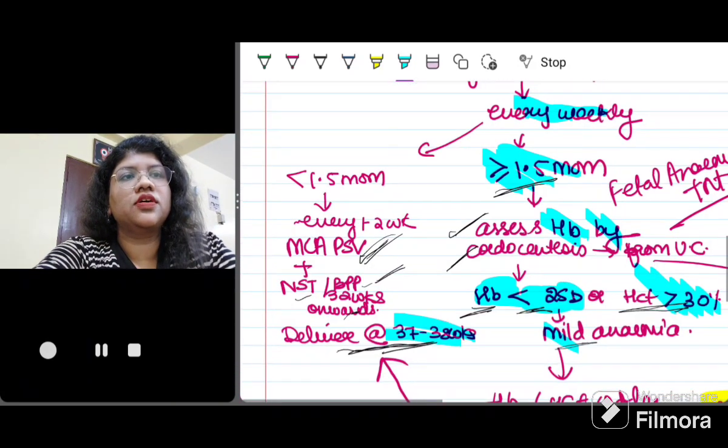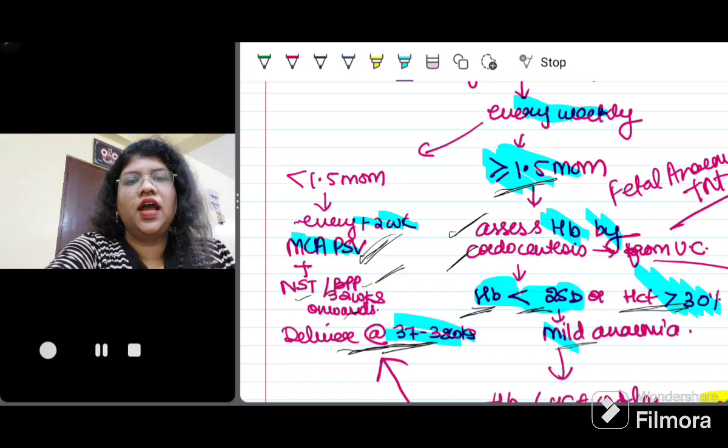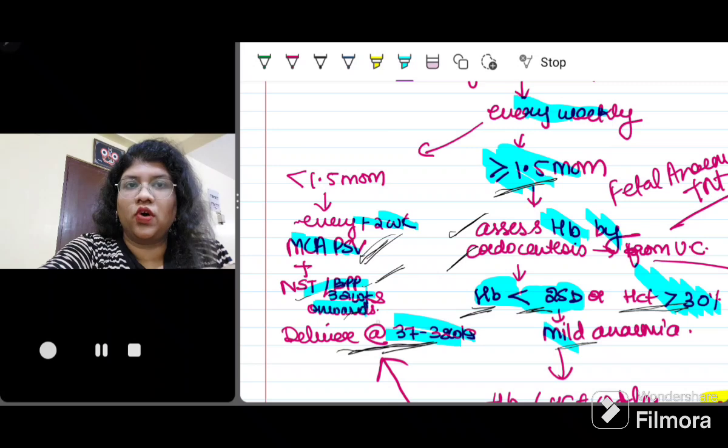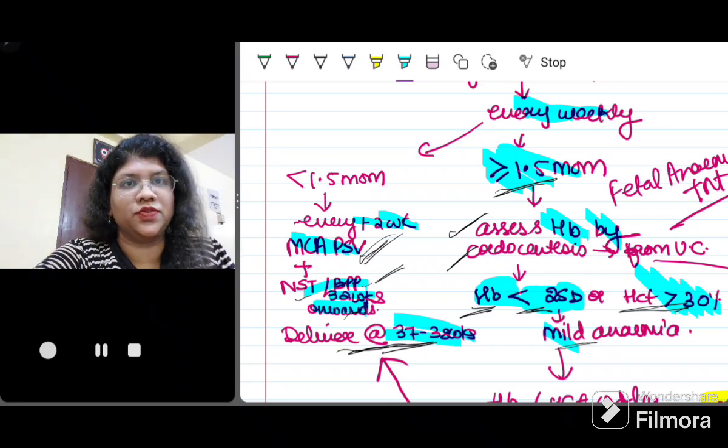Now suppose the value is less than 1.5 MOM, so again I have to monitor every 1 to 2 weekly for fetal anemia using MCA-PSV and also I have to do the NST and BPP 32 weeks onwards and again I can deliver at 37 to 38 weeks.